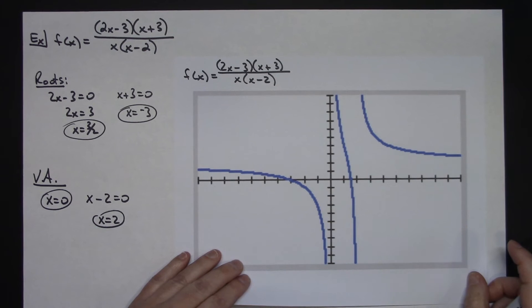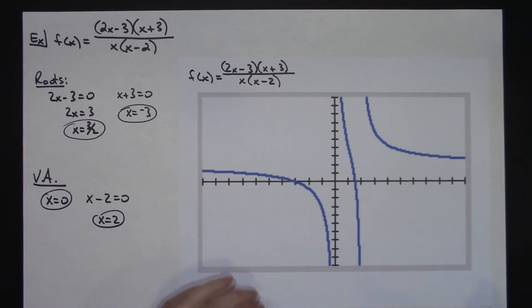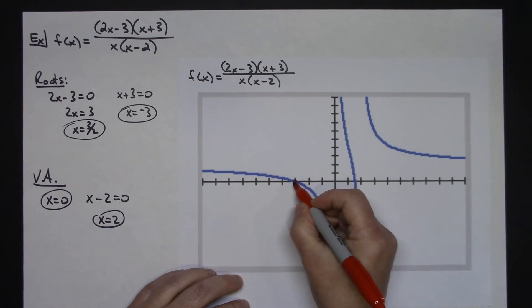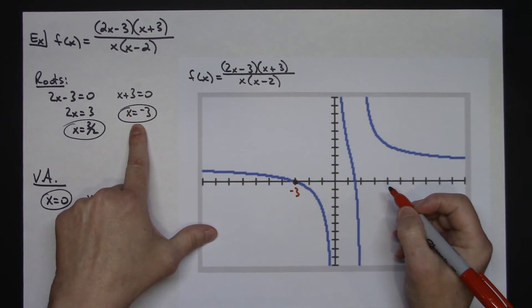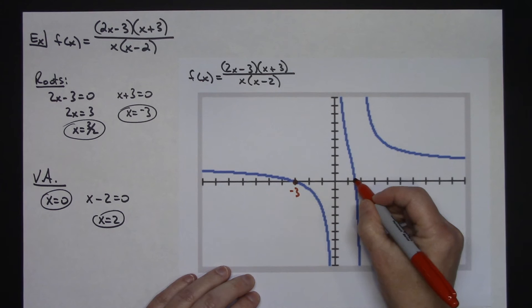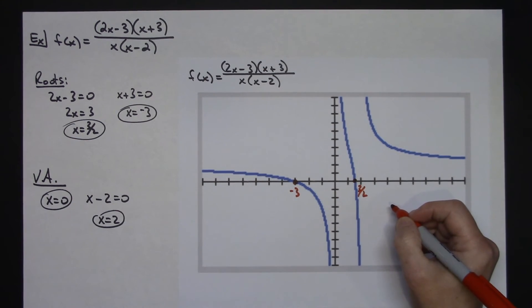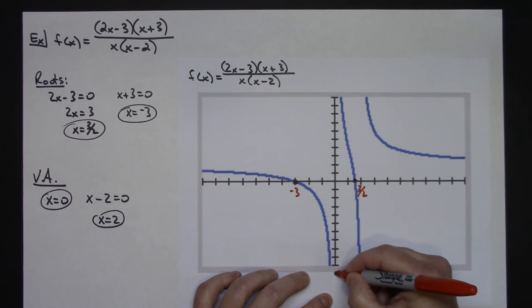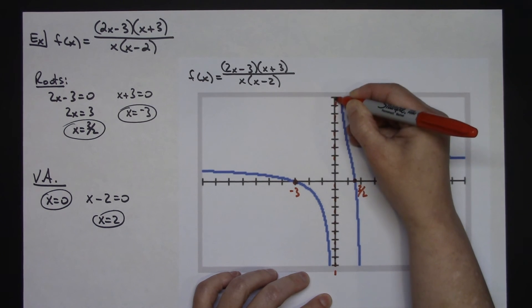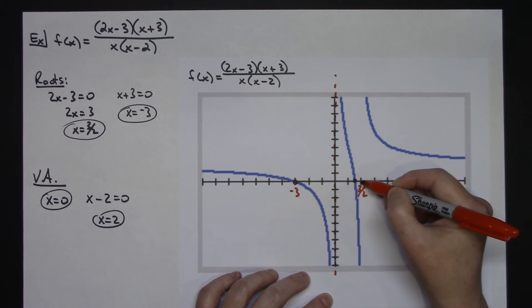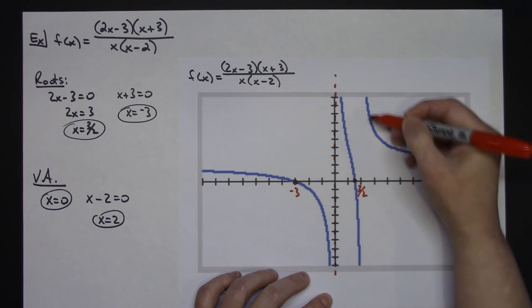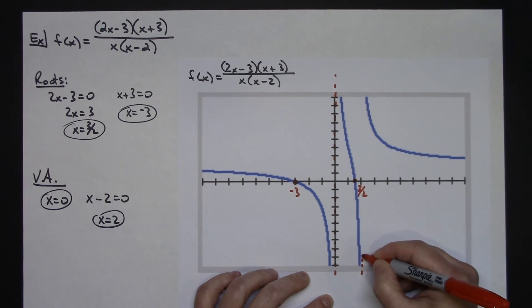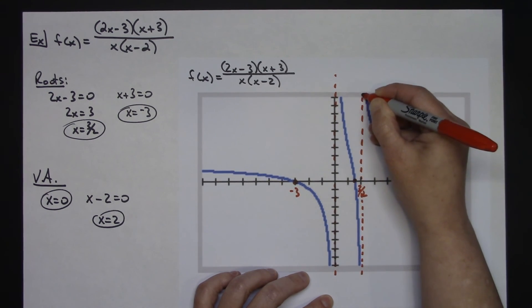I've already graphed this in the graphing calculator so we can look at it. You can see here is negative 3 right there, which was supposed to be a root, and there is one and a half — three halves — so there is the other root. Looking at the vertical asymptotes, the graph gets really, really close to x equals 0 there, confirming the vertical asymptote at zero. And then again at 2, the graph gets really, really close to x equals 2, confirming the vertical asymptote there at 2.